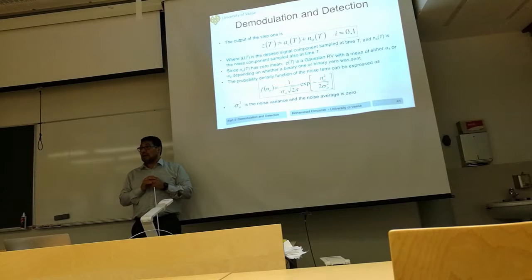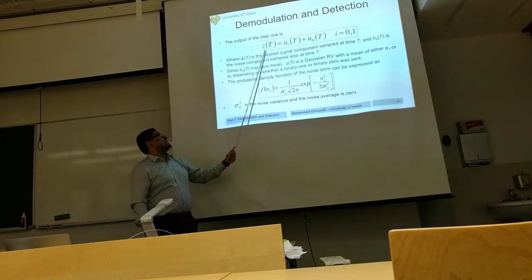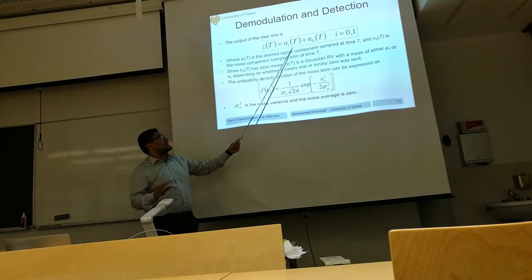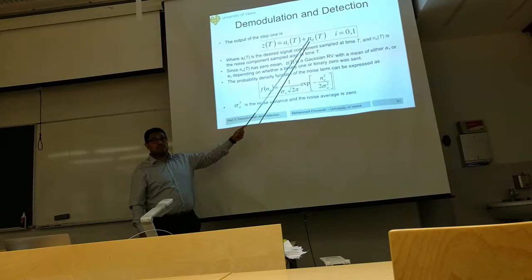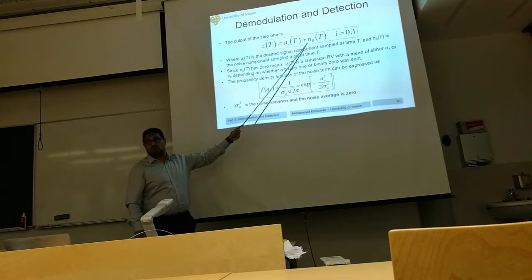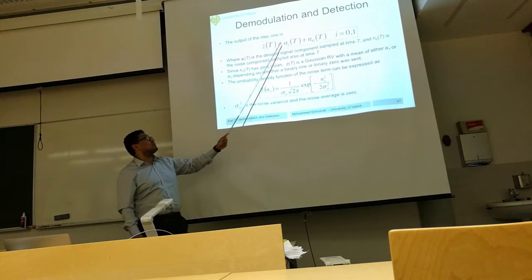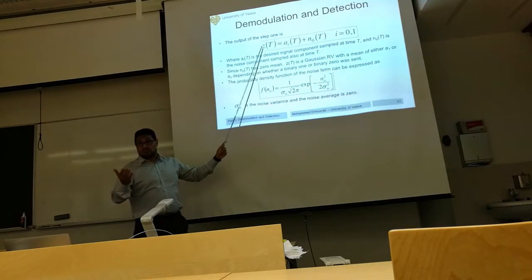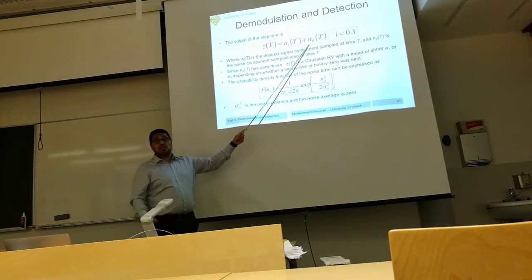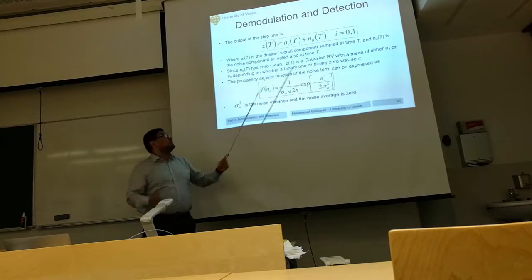Z will be Gaussian. And what is the mean? The mean is a_i. Because this component is deterministic and the noise has zero mean, the distribution of Z will be Gaussian but shifted by a_i. For example, if a_i equals 1, then 1 plus zero-mean Gaussian noise gives a Gaussian with mean 1. If a_i is minus 1, the distribution of Z is Gaussian with mean minus 1. In general, when you add any fixed deterministic value to zero-mean Gaussian noise, the result is Gaussian with that value as the mean.